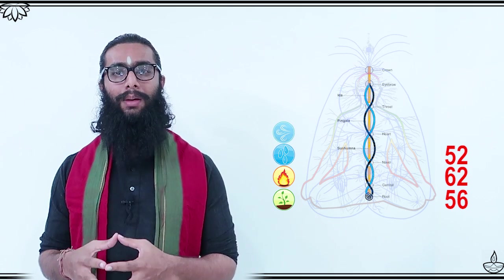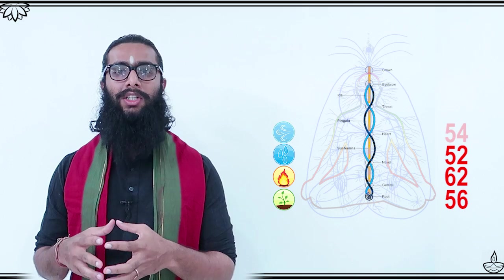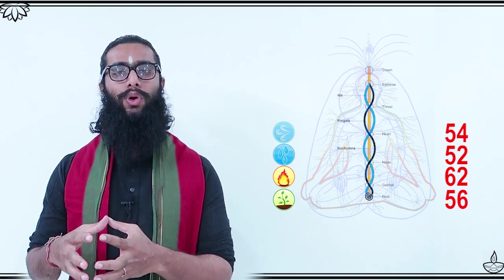In anila, or wind element, which corresponds to anahata chakra, there are chaturadhika panchashad, meaning 54 rays.